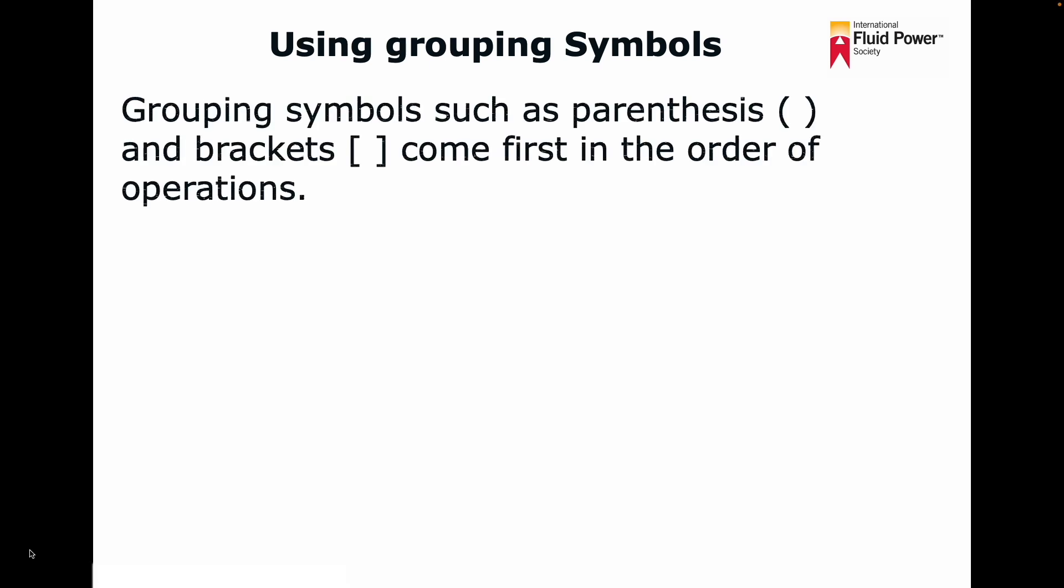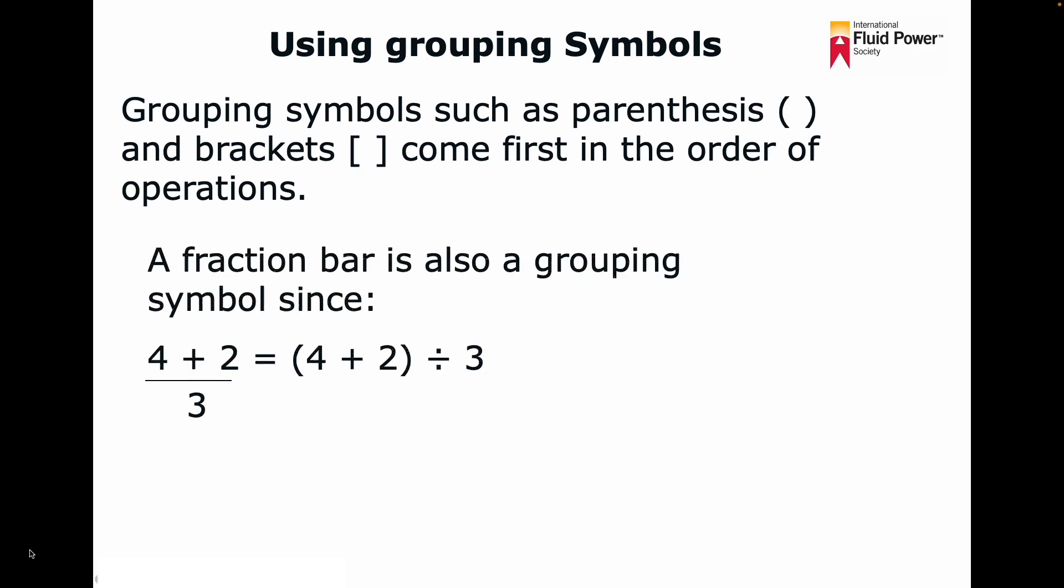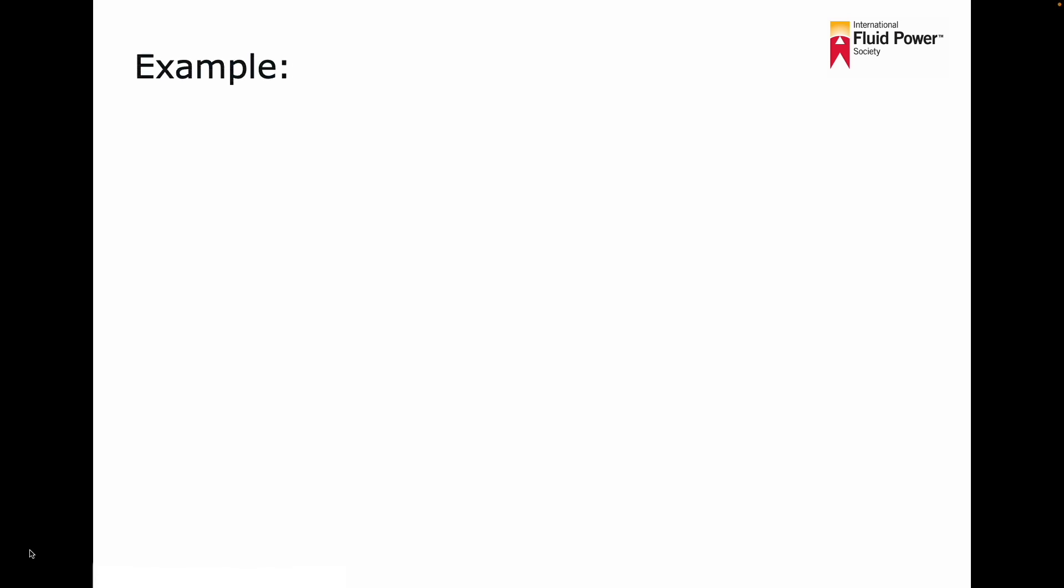Using grouping symbols. Grouping symbols, such as parentheses and brackets, come first in the order of operations. A fraction bar is also a grouping symbol, since 4 plus 2 in the numerator divided by 3 in the denominator equals the same as saying 4 plus 2 in parentheses divided by 3. Always work inside the grouping symbols first.